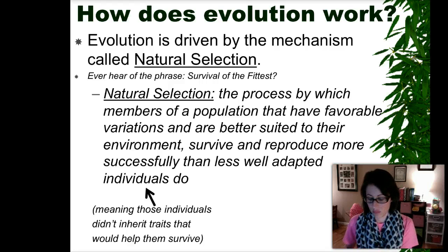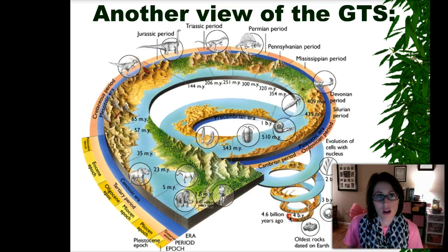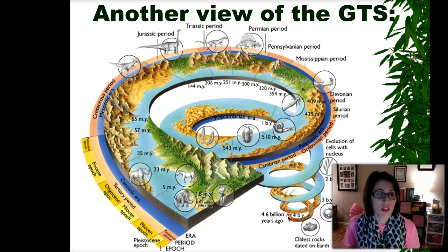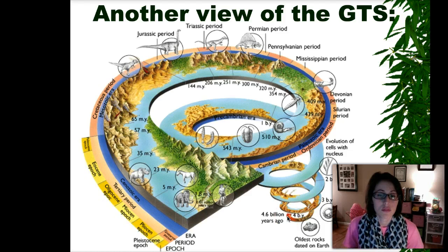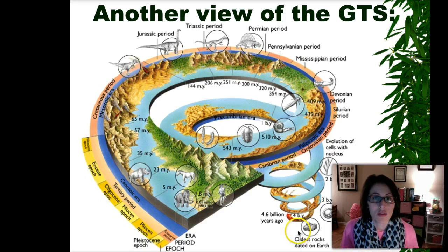Way down here is where scientists believe is the beginning of the earth. Scientists have done radioactive dating, and within this process they have determined the age of the earth. Because of the way that atoms are and how atoms break down over long periods of time, they have determined that the earth is about 4.6 billion years old. The oldest rock on earth is dated at about 4-point-something billion years old, and scientists have figured that out because of radioactive dating.